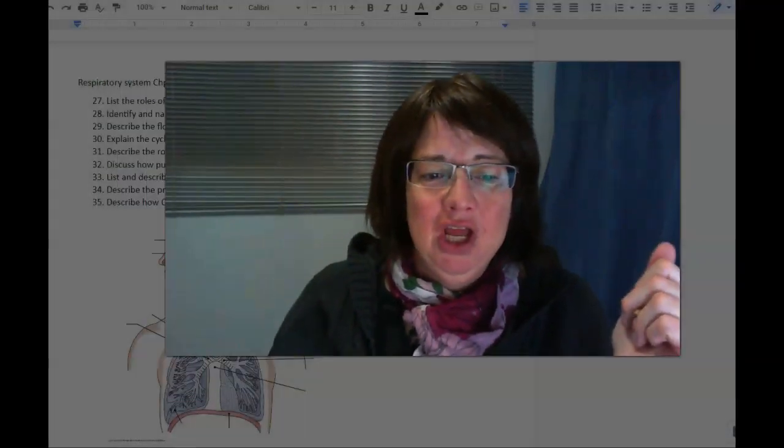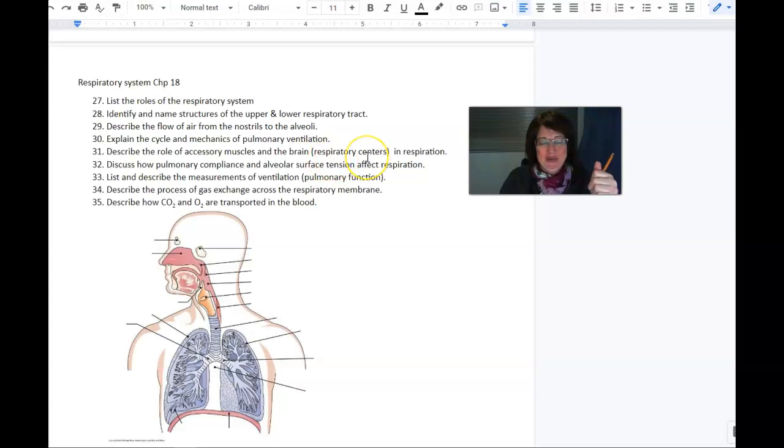Hello to my online learners and welcome to chapter 18, the respiratory system. What we're going to look at in the respiratory system is the function of it, the role of it. Quite often people just think it's about blood gases, but there's a little more that the blood gases do. Then we're going to identify the structures, describe the flow in and out all the way from the nostrils to the alveoli, explain the cycle and mechanism of pulmonary ventilation, then describe the muscles, talk about something called compliance, alveolar surface tension, and then look at measurements for respiration and basically describe how the gases are transported in the blood.